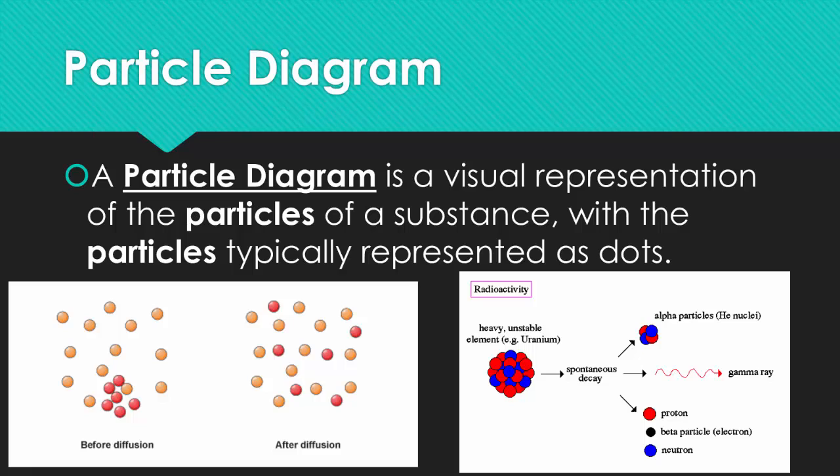When we get later into the year into nuclear chemistry, the particle diagram on the right will show the spontaneous decay of a uranium isotope.